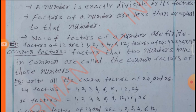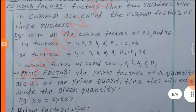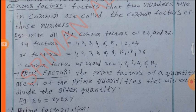Common Factors: Factors that two numbers have in common are called the common factors of those numbers. Example: Write all the common factors of 24 and 36. Factors of 24: 1, 2, 3, 4, 6, 8, 12, 24. Factors of 36: 1, 2, 3, 4, 6, 9, 12, 18, 36. Therefore, common factors of 24 and 36 are 1, 2, 3, 4, 6, 12.